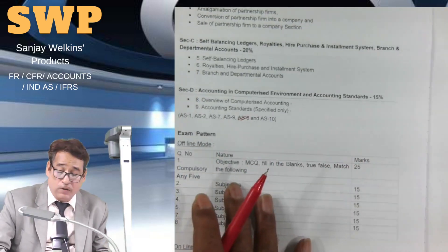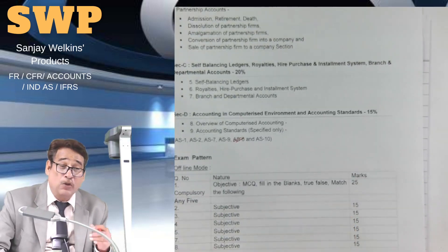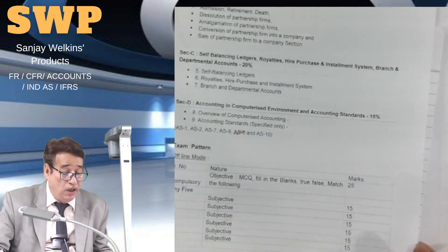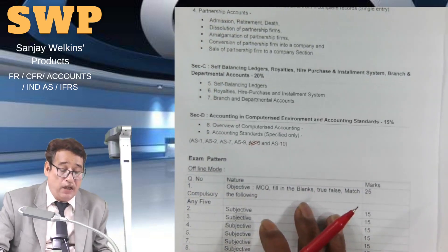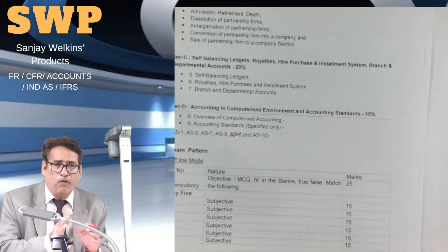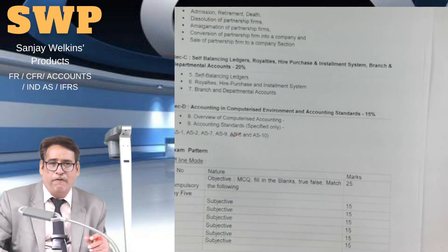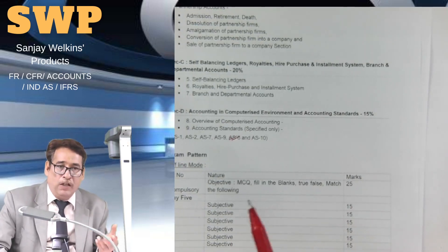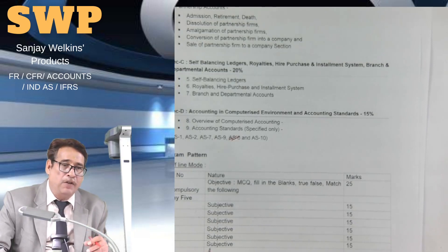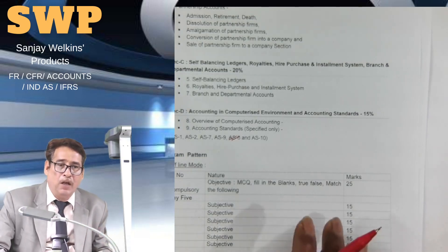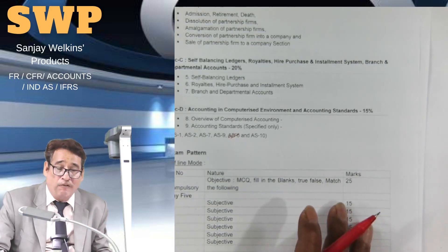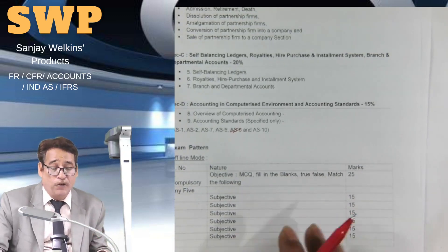These are the accounting standards you will have to study. This is the course content, and as you can see there are many chapters — a pretty vast syllabus. We have given the widest possible coverage, and we have covered each and every question of the module. This means you need not go through the institute's module at all. Moreover, there are sometimes printing mistakes in the module. Simply do the material and tutorials we are providing — we have covered every bit of the module, every past question paper, mock test paper, and RTP.